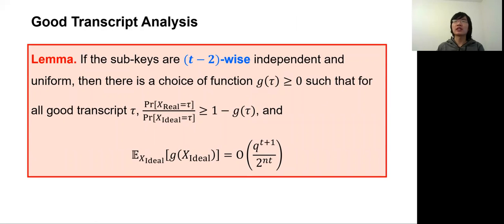After performing bad transcript analysis for both the (t-1)-wise and (t-2)-wise key schedules, the remaining part is the good transcript analysis. We directly state the lemma that applies to both key schedules, which is very similar to what was stated by Huang and Tessero — the optimal bound is still maintained. The key difference is that the requirement for subkey dependency has been weakened from t-wise to (t-2)-wise. By combining both analyses, we conclude optimal security for both the (t-1)-wise and (t-2)-wise key schedules.